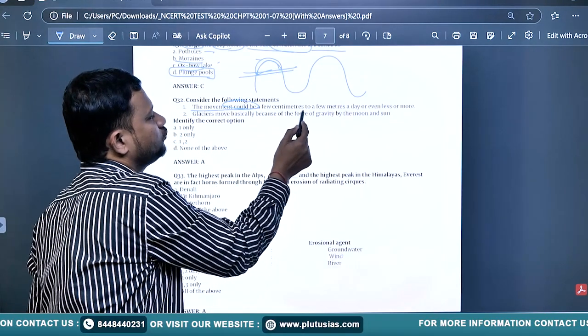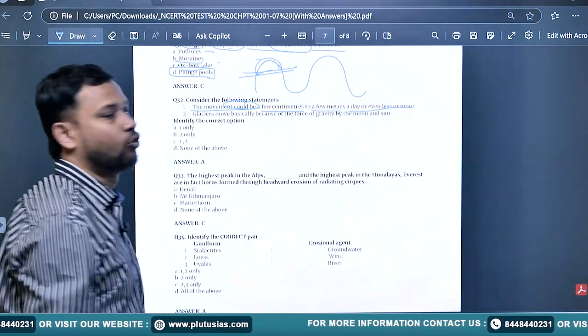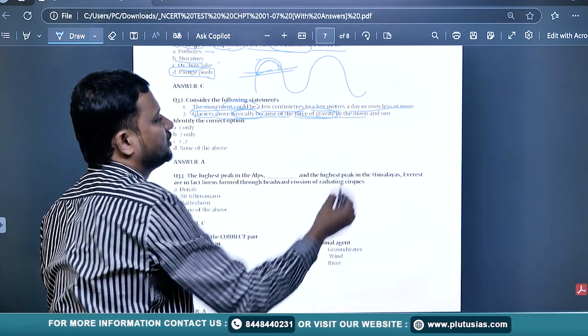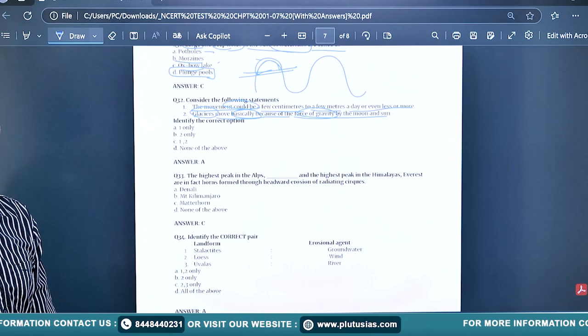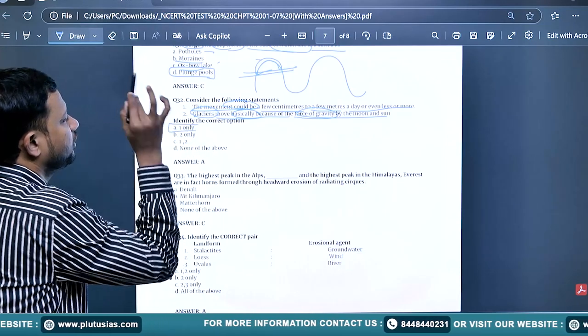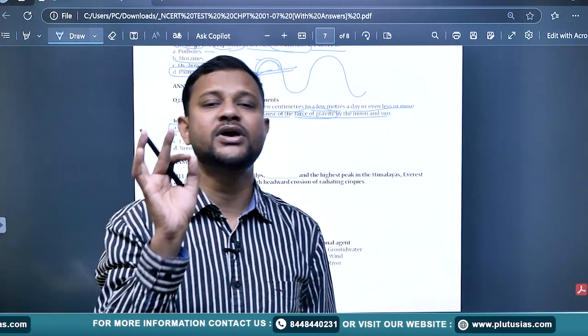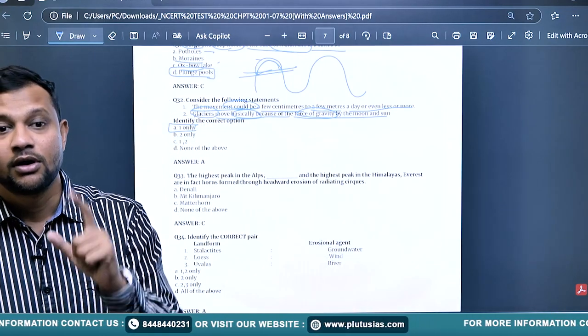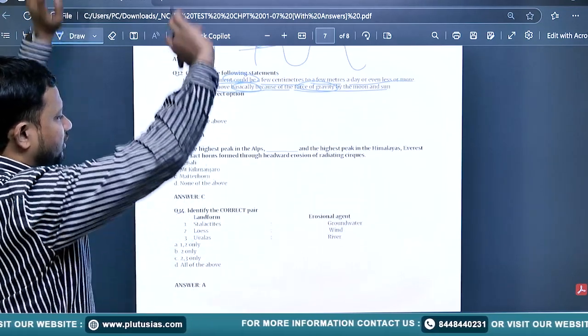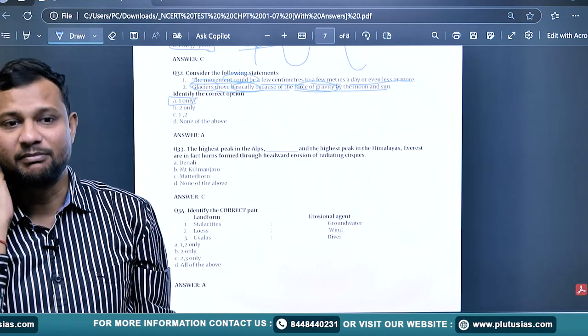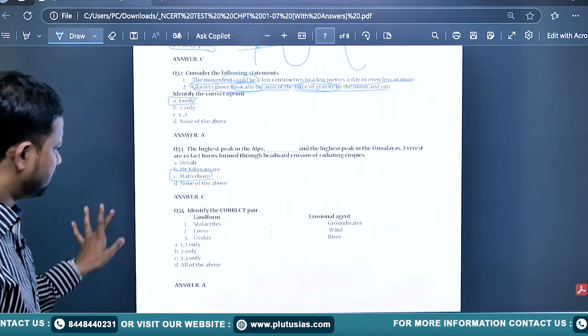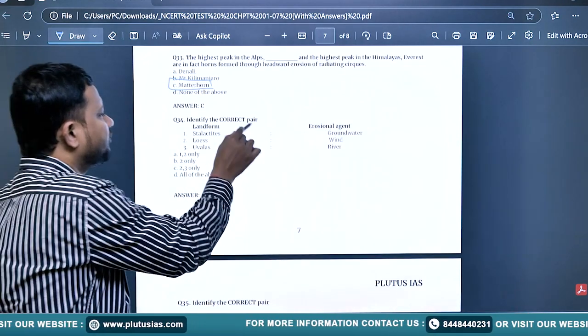The movement could be a few centimeters to few meters a day or even less or more. Glaciers move basically because of the force of gravity, not by the moon and sun. They are flowing under their own mass and the gradient of slope. Glaciers are one of the slowest moving erosion agents, but their potential for erosion is equally high because mass or volume is high. The highest peak in the Himalayas is Matterhorn. It was in current affairs as well in 2020-2022.